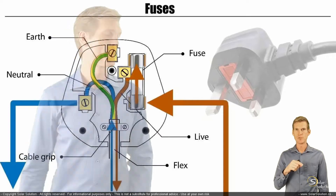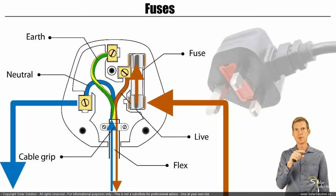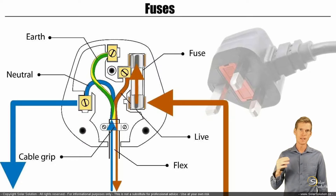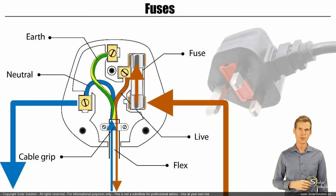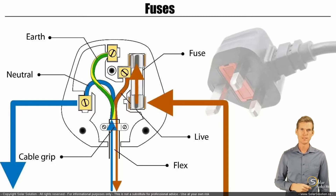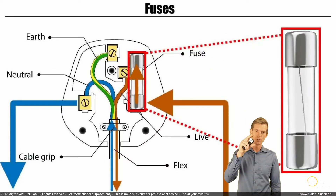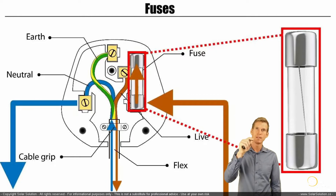In a normal situation, the earth is not contributing to the overall electrical system. Power flows through the live connector, through the fuse, into your loads, and then back out through the neutral connector. If we zoom into the fuse, we'll see that it's more like a body — an element — and inside that body there is a small sacrificial strip.